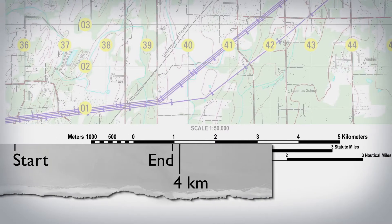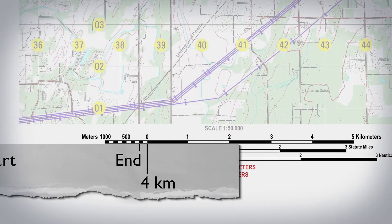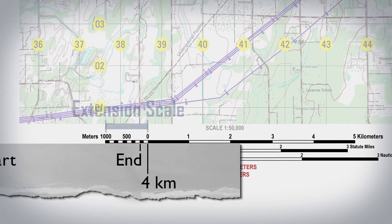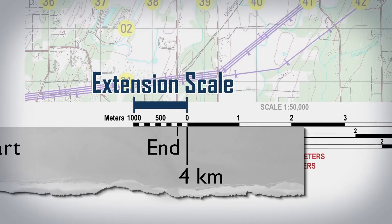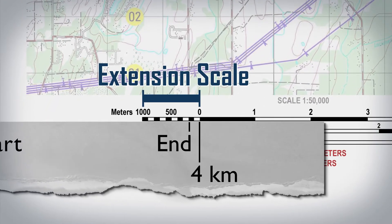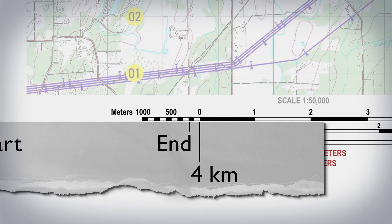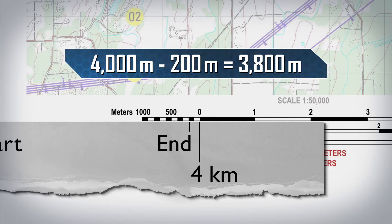Place the new tick mark under the zero on the bar scale. Then use the extension scale to the left of the zero to determine your distance within the 100 meter increments. Subtract this distance from 4000 to find the total distance.